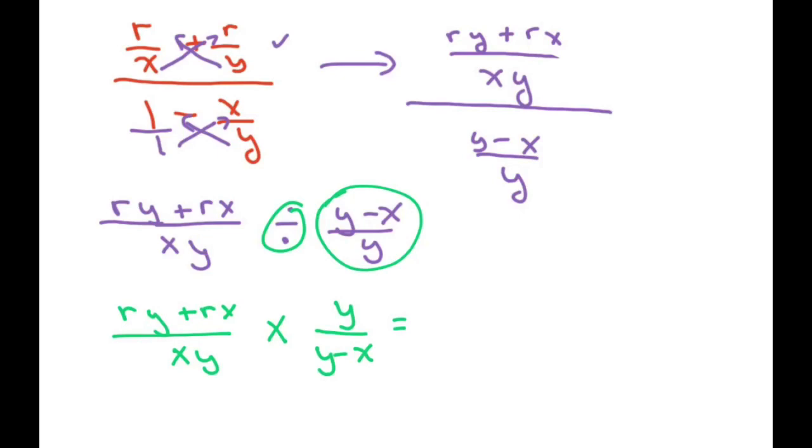Okay, so let's distribute all that, so let's deal with the numerator. We have ry squared plus rxy over, let's multiply this, we get xy squared minus xy. And that's it.